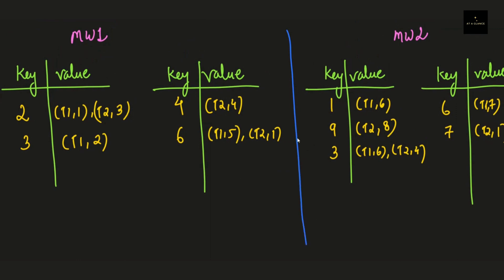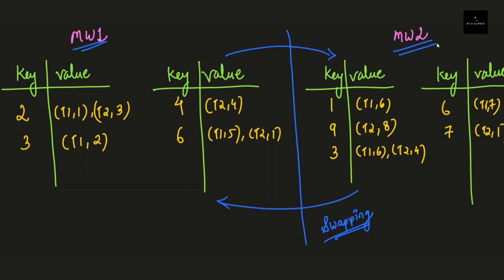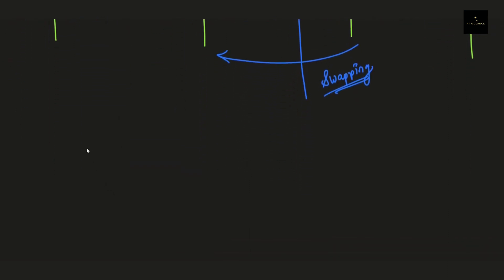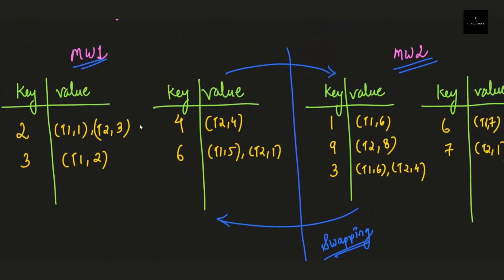In the next step, we swap the second table from Map Worker 1 with the first table from Map Worker 2. This swapping is done to avoid any redundant keys present between the two map workers. The swapping is performed by the reducer workers — our map workers now become reducer workers and swap one table between them.